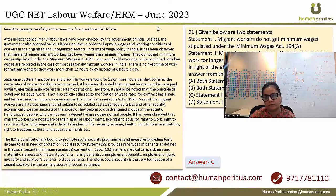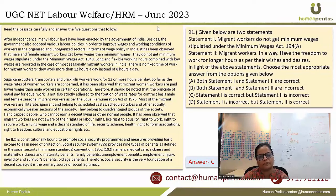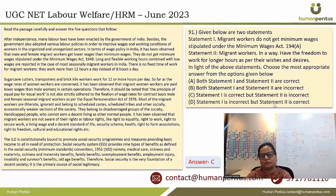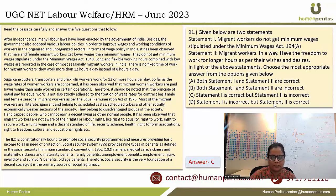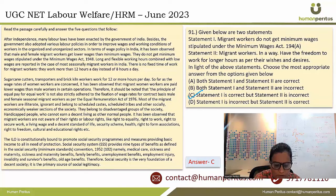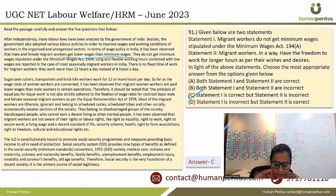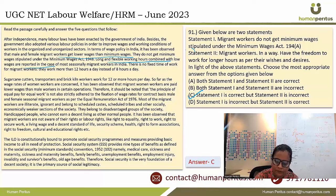Next are passage-based questions on migrant workers. Statement 1: Migrant workers do not get minimum wages stipulated under the Minimum Wages Act — this is correct as per the passage. Statement 2: Migrant workers have the freedom to work for longer hours as per their wishes and desires — this is incorrect, because the passage says they face long and flexible working hours with low wages, not necessarily out of their own wishes. Correct answer is option C.